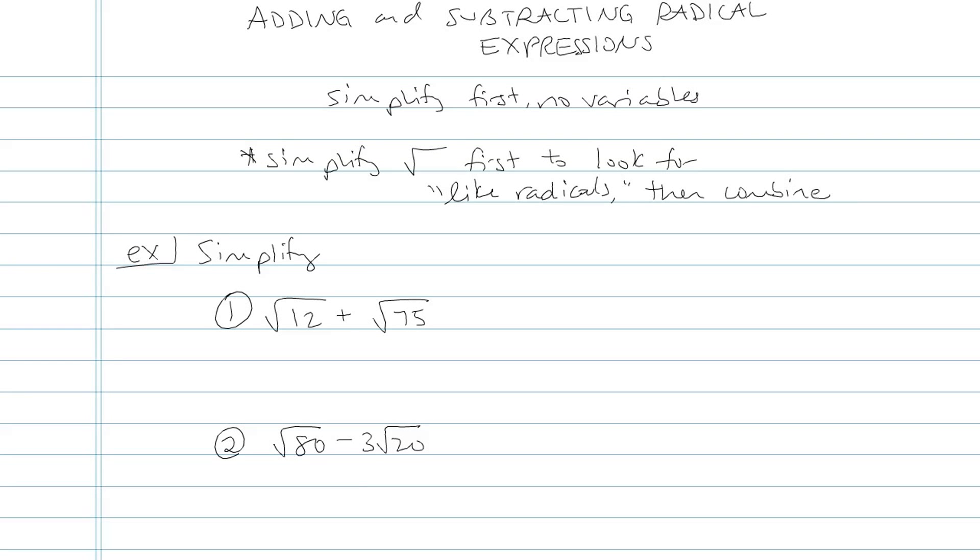Adding and subtracting radical expressions, where you have to simplify the radicals first to see if they're like radicals. In these problems, we're going to be simplifying the square roots first to see if they have the same numbers under the radicals. If they do, and only if they do, then we can combine them by combining like terms.